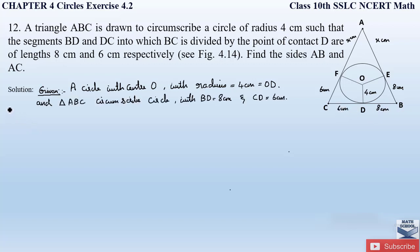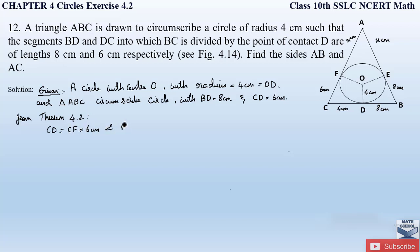From theorem 4.2, the length of tangents drawn from an external point are equal. So we write: CD = CF = 6 cm and BD = BE = 8 cm. Please write down the full theorem statement so that you will get full marks.